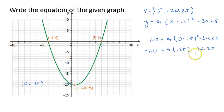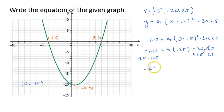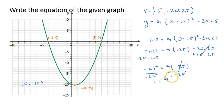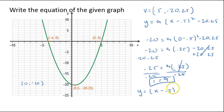Plugging in: -20 = a(0 - 0.5)² - 20.25. Simplifying inside the parentheses: 0 - 0.5 = -0.5, and (-0.5)² = 0.25. So -20 = a(0.25) - 20.25. Adding 20.25 to both sides: 0.25 = 0.25a. Dividing both sides by 0.25 gives a = 1. So my equation is y = 1(x - 0.5)² - 20.25.